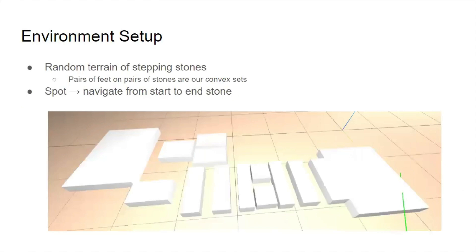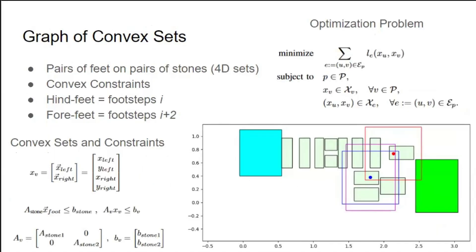Our environment consists of a random terrain of stepping stones. Pairs of feet standing on pairs of stones are our convex sets. We added frames to Spot's feet to locate foot positions. Spot's goal is to navigate from the start to the end stone. GCS is, in essence, a shortest path problem, where you're trying to find your shortest path through a graph of convex sets, given some convex cost function on your edges. In our case, our convex sets are pairs of feet on pairs of stepping stones, so two 2D feet give 2×2 equals 4D sets.